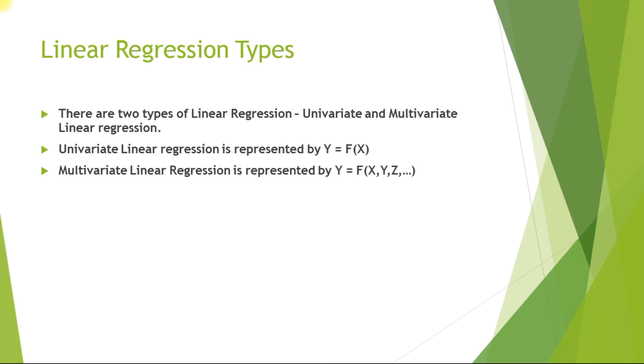Now we have two types of linear regressions. Either it can be univariate or it can be multivariate linear regression. A univariate linear regression is represented by y equals f(x). That is, it depends on a single independent variable. But when there will be other factors involved, or other independent variables involved, or multiple independent variables involved, it would be called as a multivariate linear regression. If you see here, y as a function of x, y, z, where x, y, z are all independent variables, and the y value will depend on these independent variables.